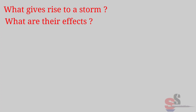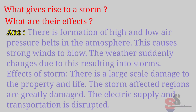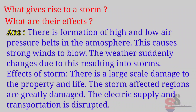Let's recall — Textbook page 69: What gives rise to a storm? What are its effects? Answer: There is formation of high and low air pressure belts in the atmosphere, causing strong winds to blow and weather to suddenly change, resulting in storms. Effects of storm: there is large-scale damage to property and life; storm-affected regions are greatly damaged; electric supply and transportation are disrupted.